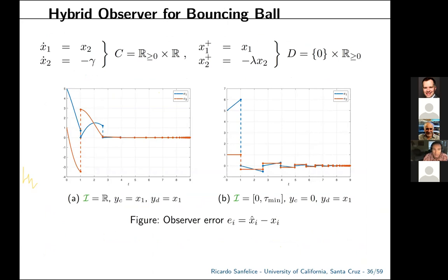A canonical example is the bouncing ball — behind the Zaguia-Parazo example shown earlier — where we estimate position and velocity from position measurements. We show convergence for different settings of the calligraphic I set corresponding to different restitution coefficient parameters.